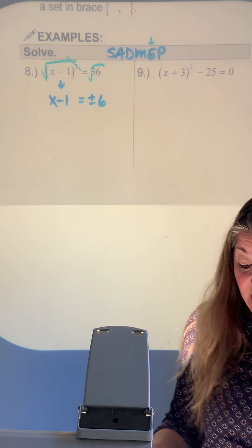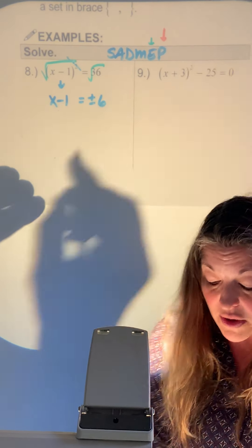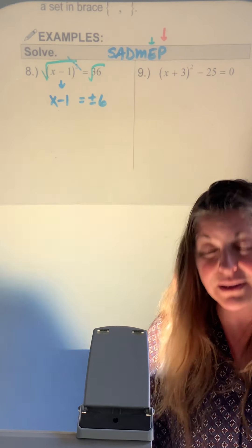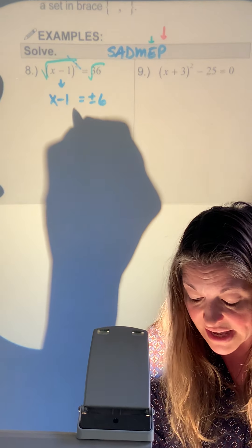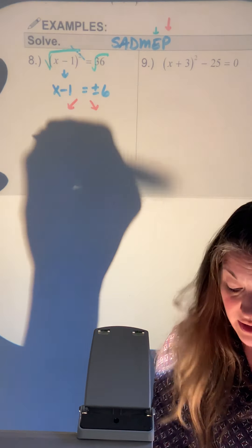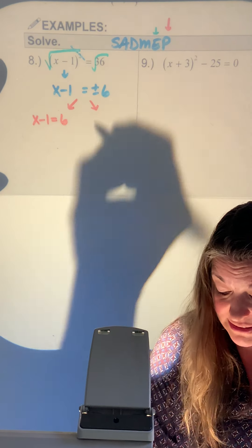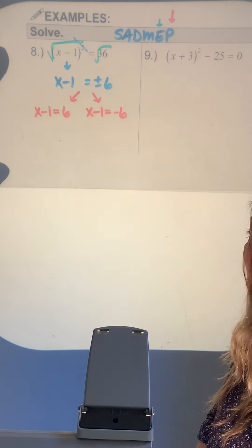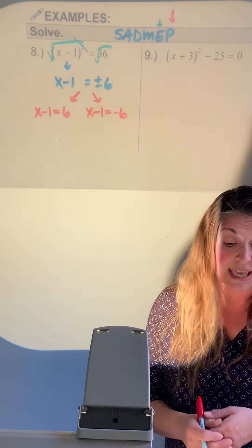Now I've broken out of the parentheses and I'm ready to take care of the minus 1. Since I have a positive 6 and a negative 6, I split into two equations: x minus 1 equals positive 6, and x minus 1 equals negative 6.